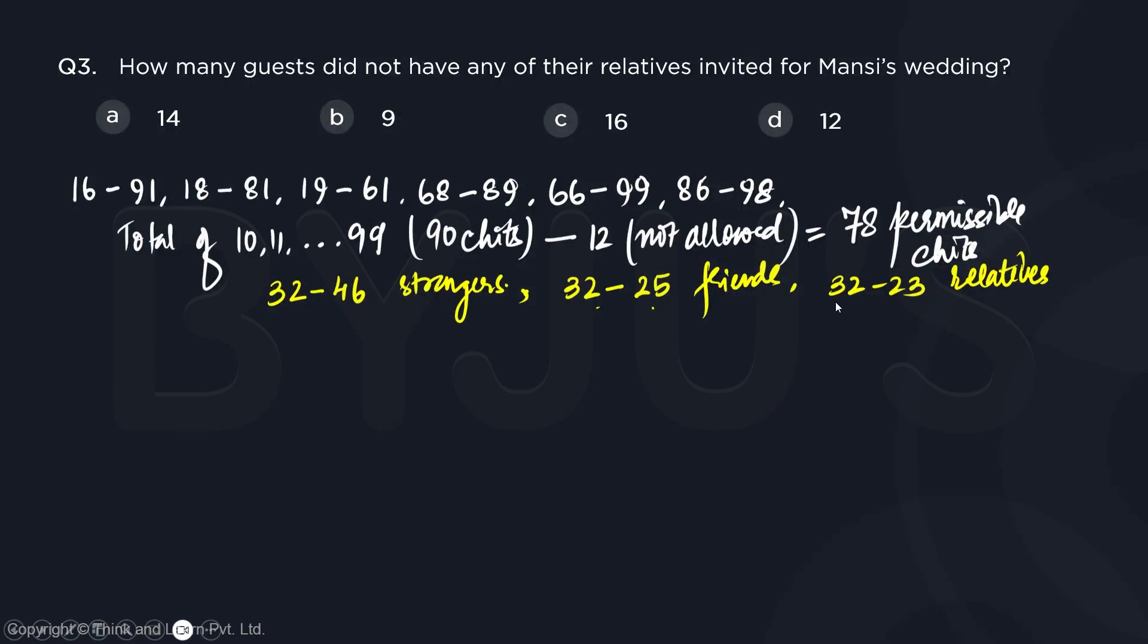Question number 3. How many guests did not have any of their relatives invited for Mansi's wedding? So it means we have to think of a number which is unique where we cannot have any digit common.